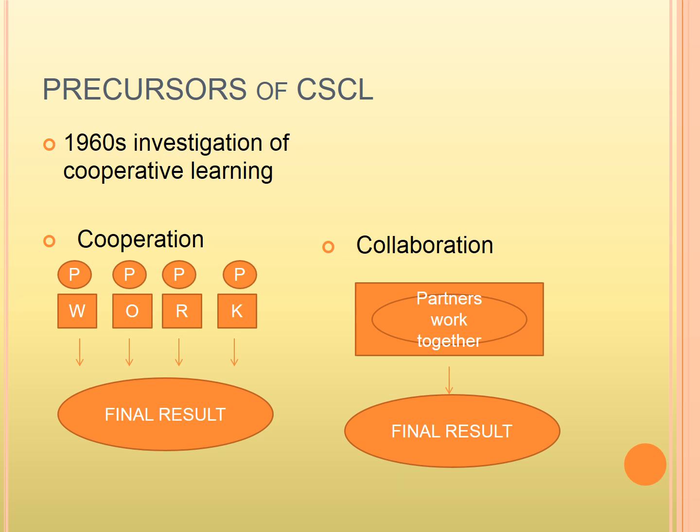The theoretical precursors of CSCL are in the 60s and are related to cooperative group learning. There is an important difference between cooperation and collaboration. CSCL is specifically about collaborative learning. Cooperation is when partners split the work and do subtasks individually, then assemble their results into a final outcome. Collaboration is the process where partners do all the work together — they don't divide it.